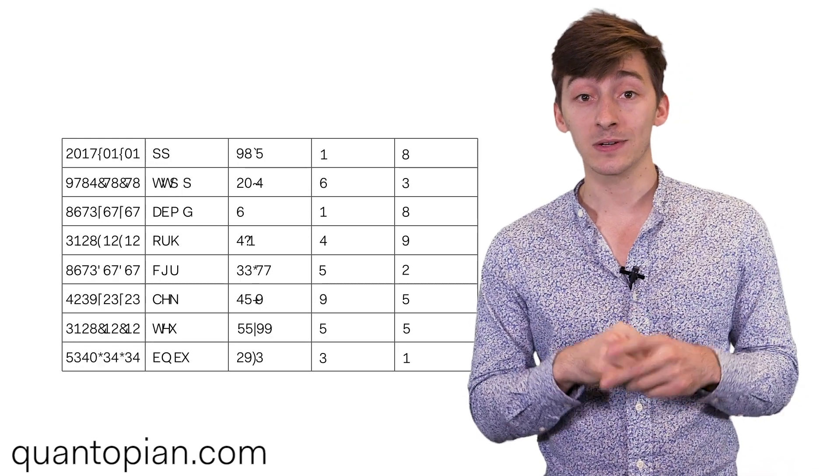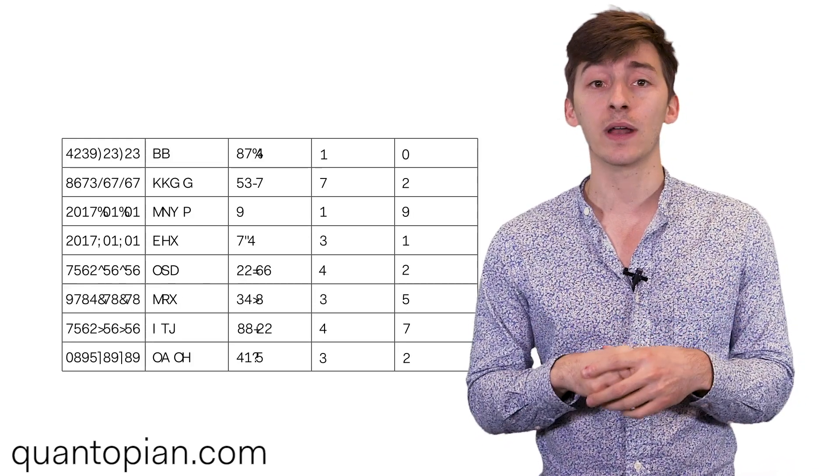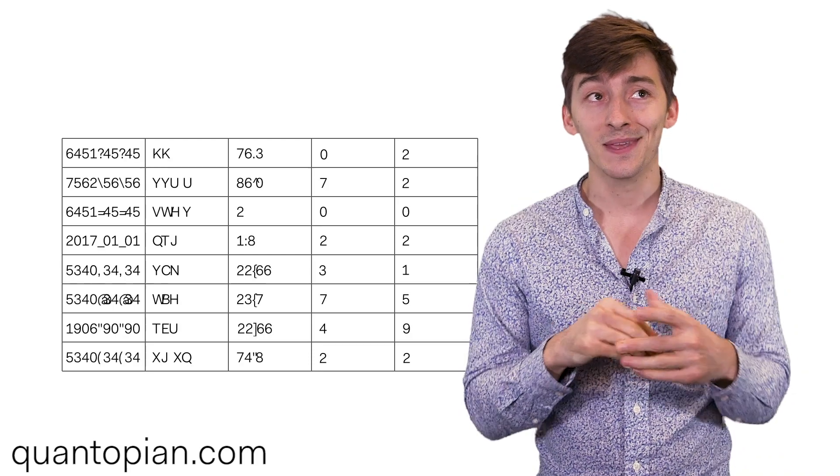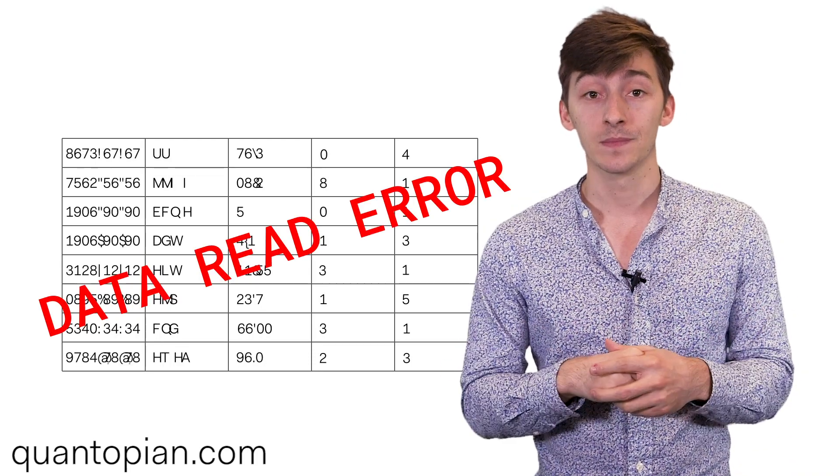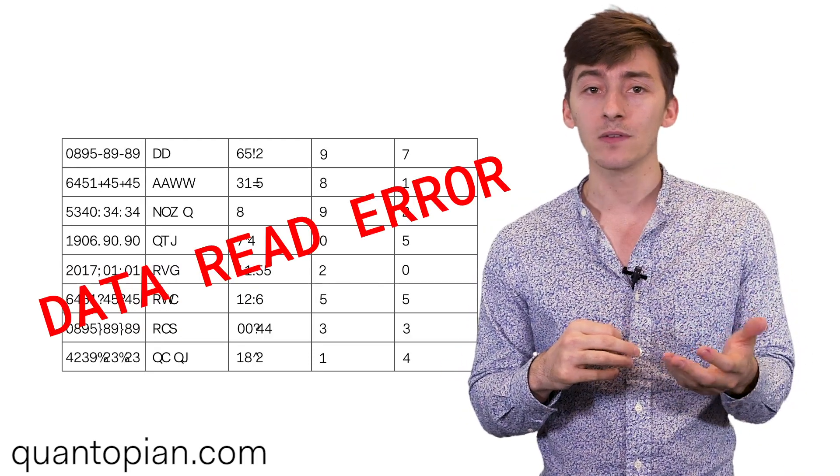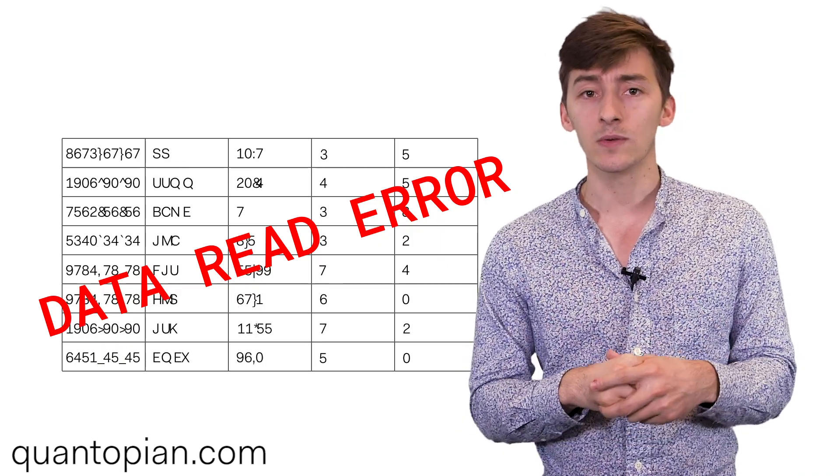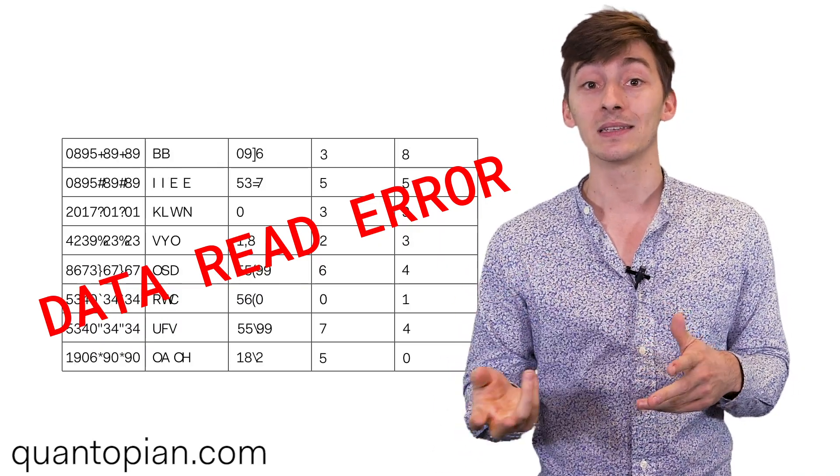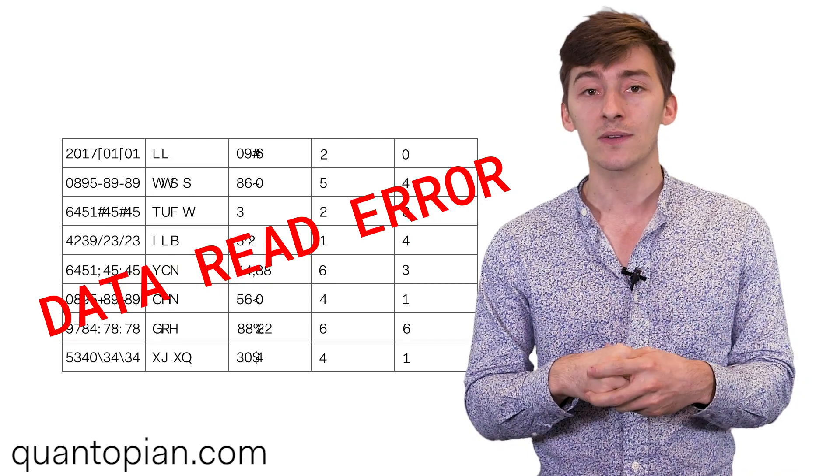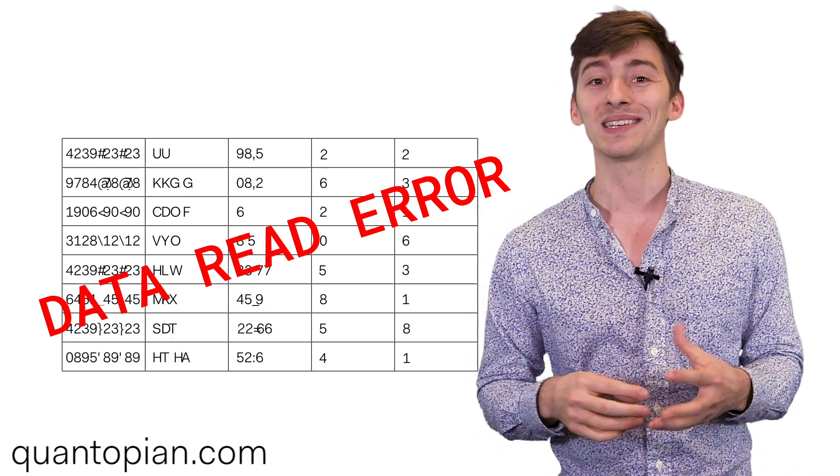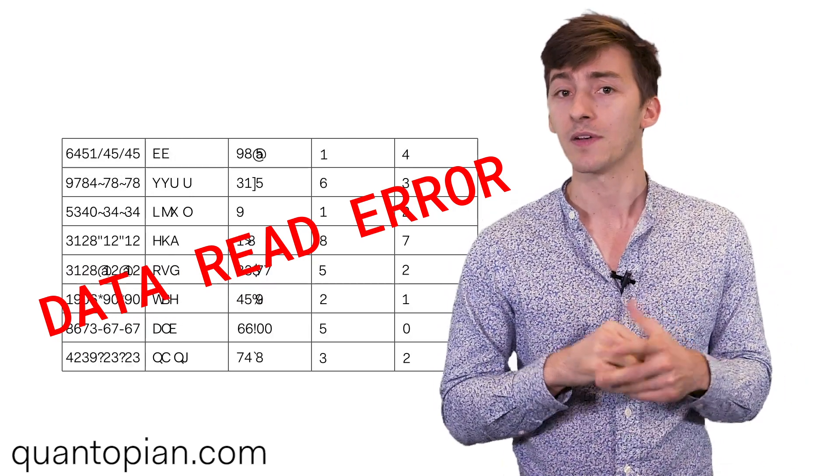First and foremost, whenever you actually get your data into Python or whatever other tool you're using, it might just not read correctly. Sometimes your numerical values might be parsed as strings, and this is often something that you can change based on the settings in the parser. It's something to check for before you actually try passing it into a model, otherwise you're going to get a lot of angry errors.